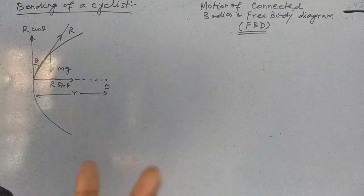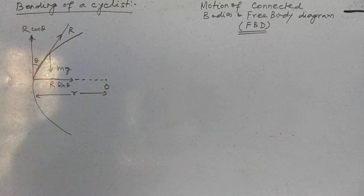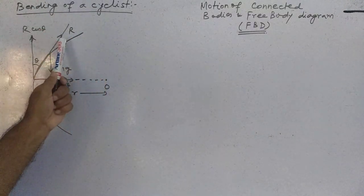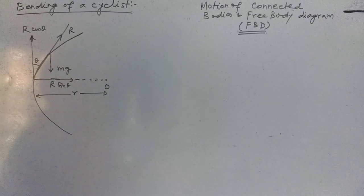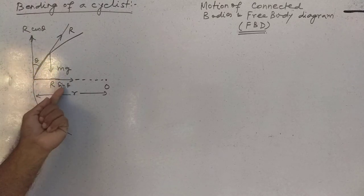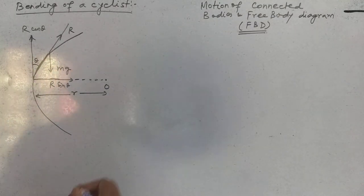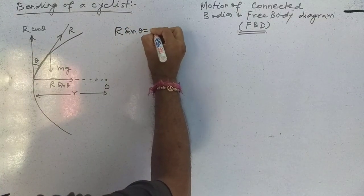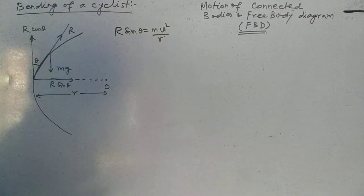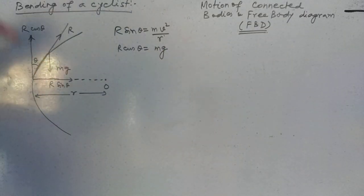That is why the person leans at an angle theta with respect to the vertical. The reaction force R acts through the body of the person and can be resolved into two components. If theta is the angle of leaning with respect to the vertical, then R cos θ and R sin θ are the two components. R sin θ provides the necessary centripetal force, while R cos θ is balanced by the weight acting vertically downward.